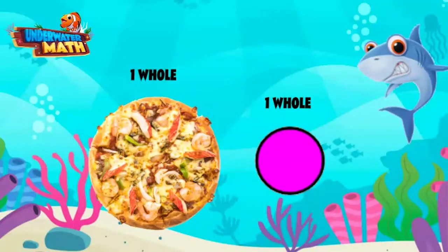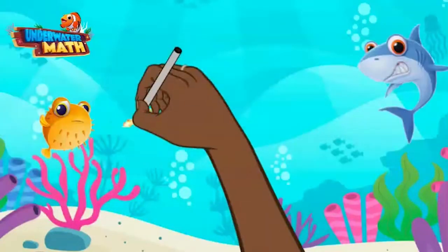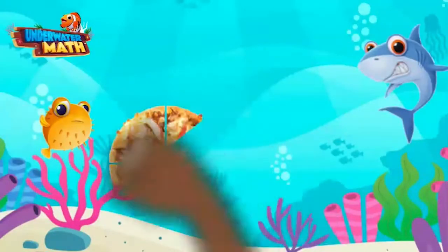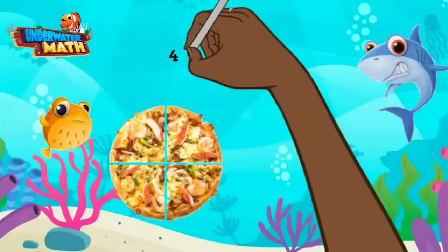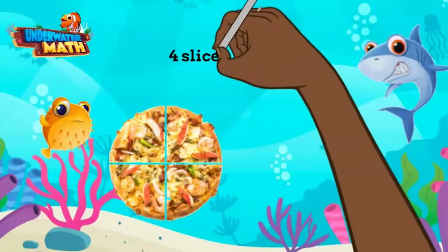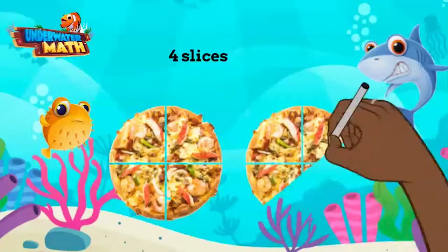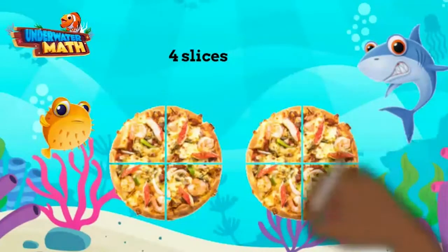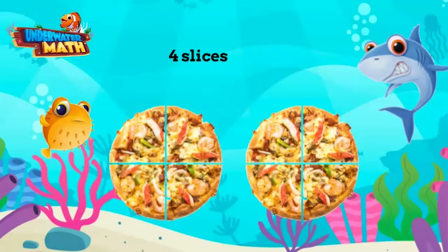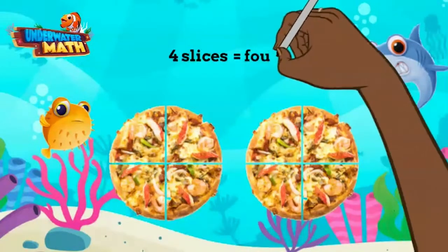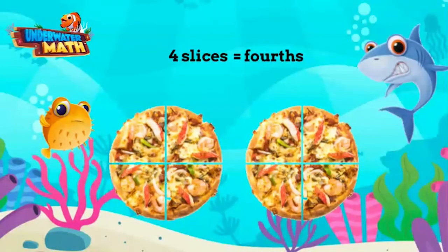First, we need to name the fraction of objects that are more than one whole. Let's say Sir Puffington and I have two whole pizzas. Each pizza is cut, or partitioned, into four slices. When naming a fraction beyond or more than one whole, we look at one figure or object to name the fraction. Because this pizza and the other pizza are both cut into four slices each, we can say these two pizzas are partitioned into fourths.